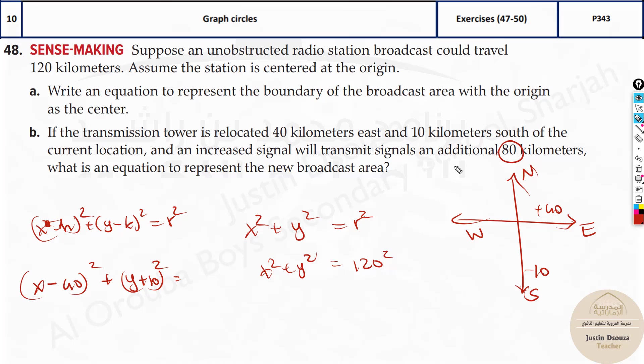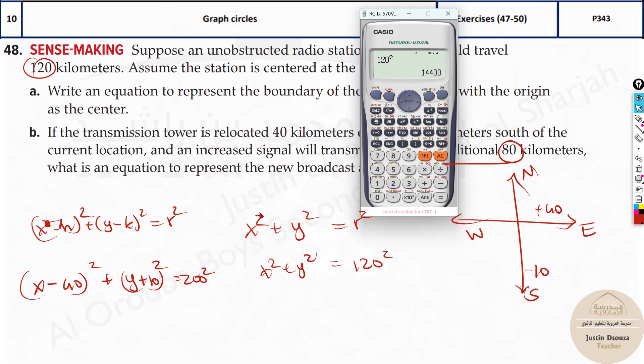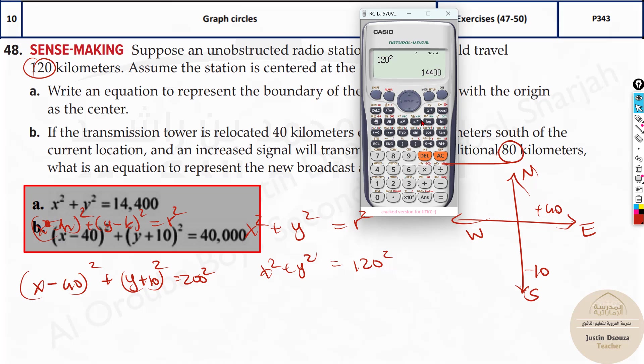Now, here they have told 80 additional. It was already 120. So it is 200 squared. Let's put this in the calculator. The first one is 14,400. You can see that's the answer. For the next one, 200 squared is 40,000. Circles are generally very easy.